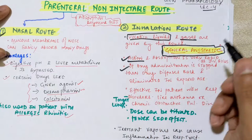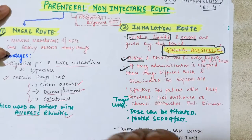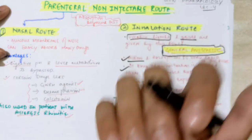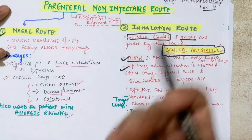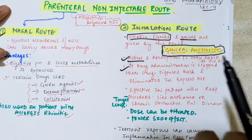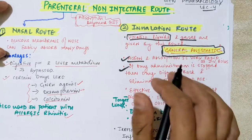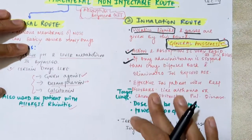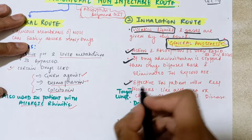Third, if drug administration is stopped, the drug diffuses back and is eliminated in the expired air. Meaning: if the patient stops inhaling, the extra drug that has diffused in will come back and be exhaled out along with the expired air — similar to how we exhale carbon dioxide. This means you can actually titrate the drug and adjust doses accordingly.